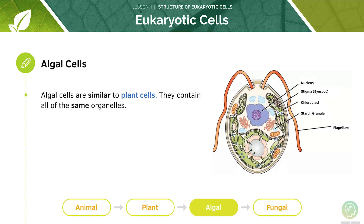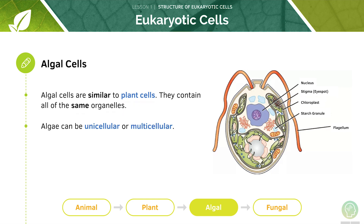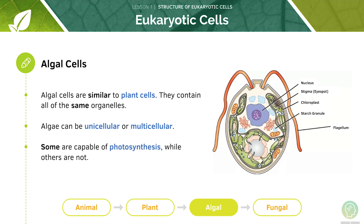Algal cells are very similar to plant cells — they contain all of the same organelles. However, unlike plants, they can be unicellular or multicellular. Some of them are capable of photosynthesis, while others are not.